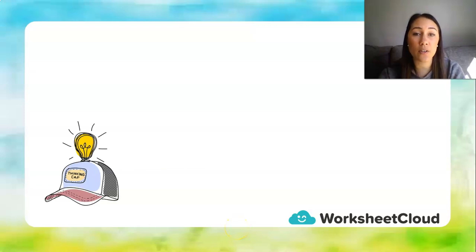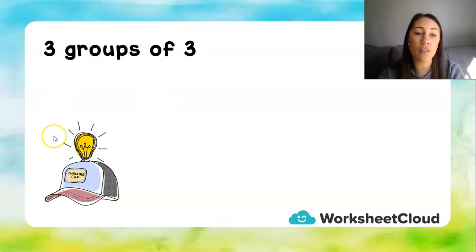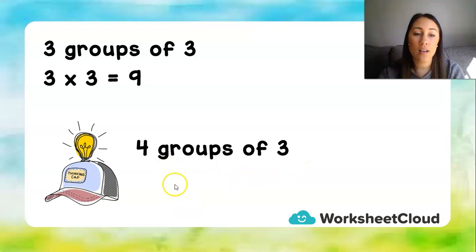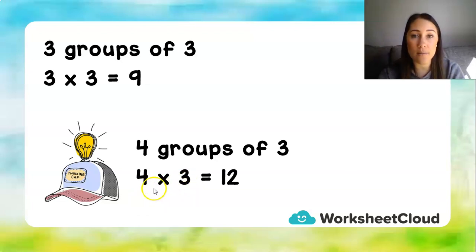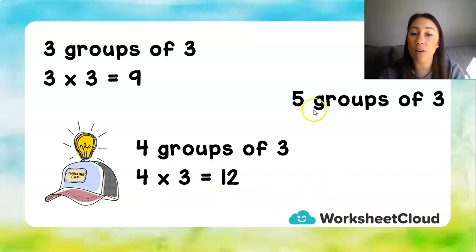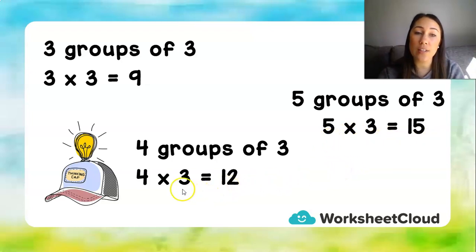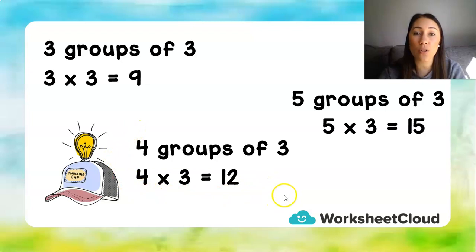If you know how to make groups of three, you can work out: three groups of three is three times three equals nine; four groups of three is four times three equals twelve; five groups of three is five times three equals fifteen. From there you can extend to seven, eight, nine, and ten groups of three. The more you practice, the more you will know your three times table.